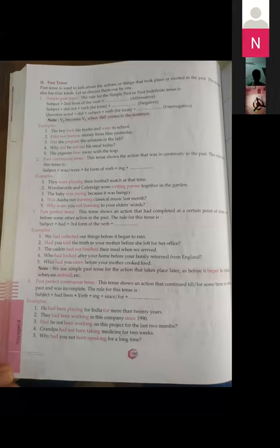Now examples are given. The boy took his book and went to school. This is simple past affirmative sentence. Second form has been used: took and went. Second sentence: I did not borrow money from him yesterday. The sentence is negative, that's why we will use did not, and borrow will be in first form. Did she prepare the solution in the lab? Question word did is there, if did is not given and you have been asked to change the sentence in interrogative form of past tense, then you will pick up the helping verbs.